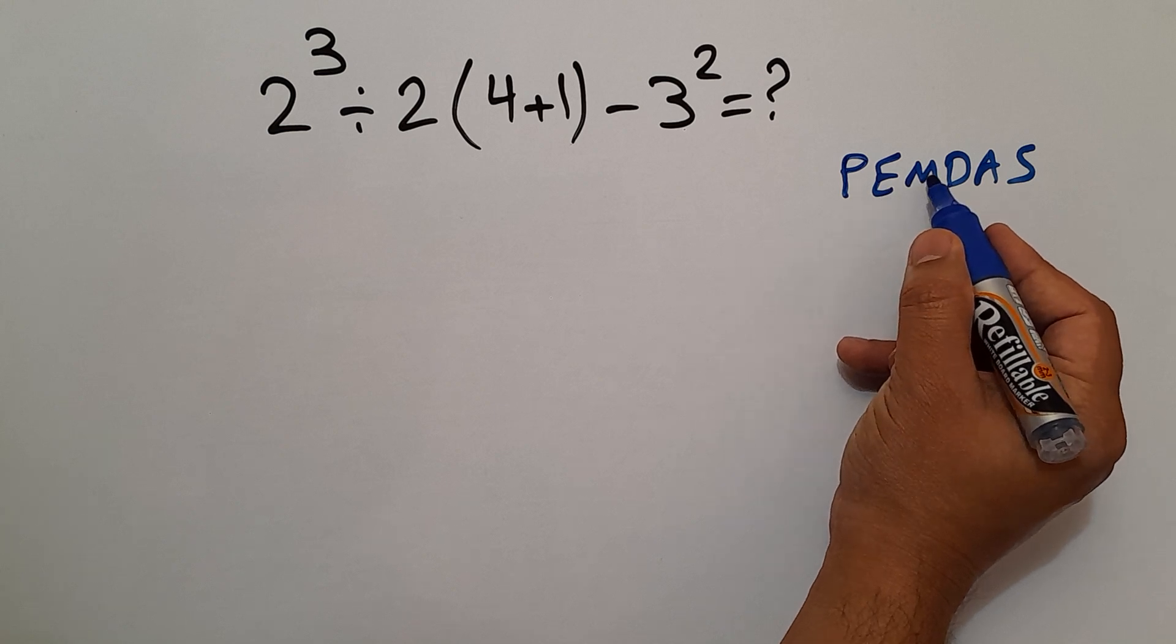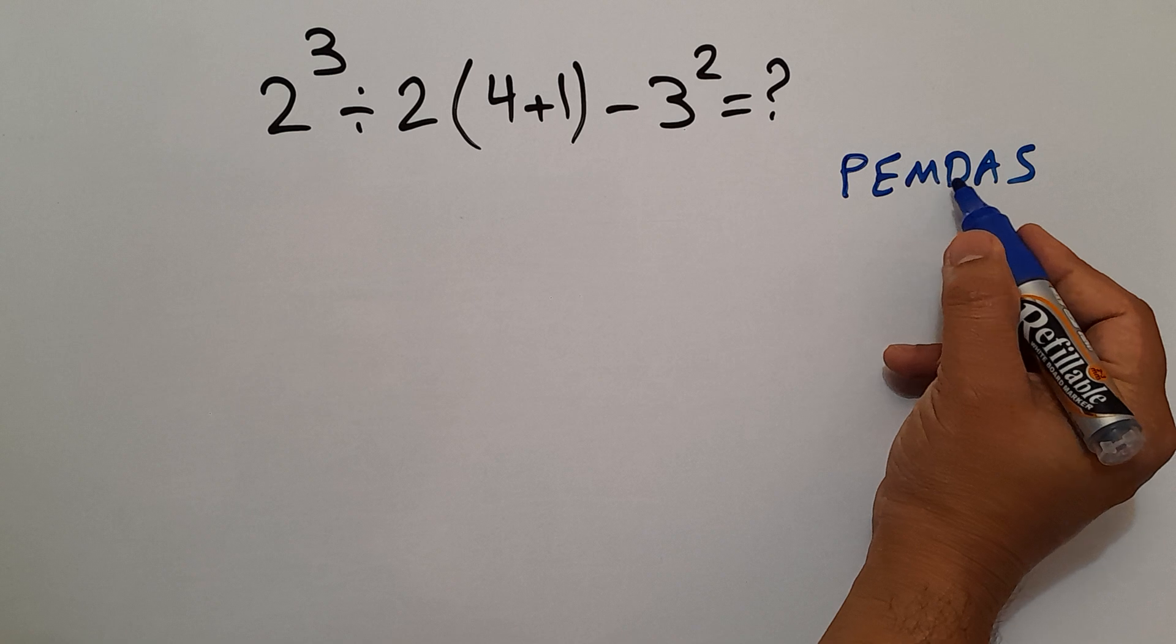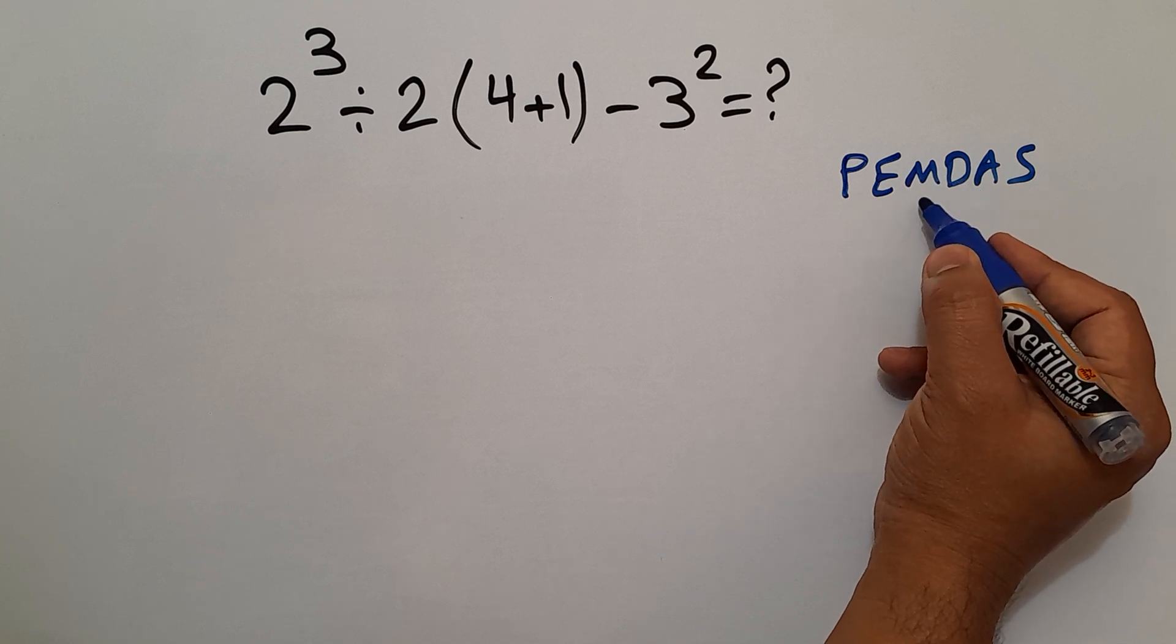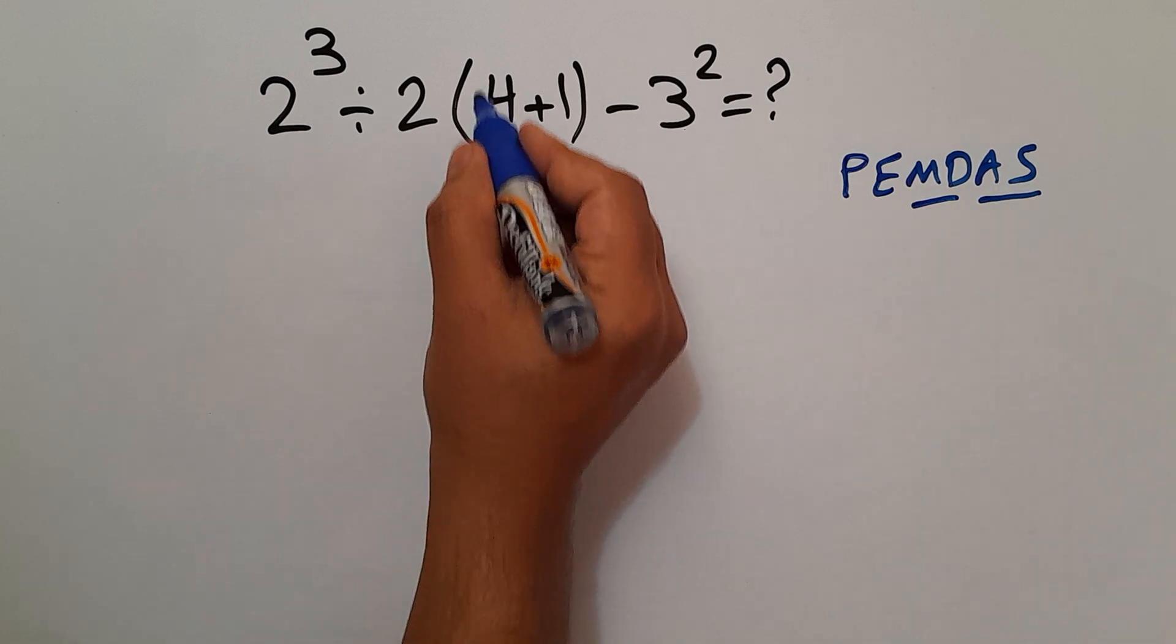Remember that multiplication and division have equal priority and we have to work from left to right. The same applies to addition and subtraction. So here, first we do this parentheses.